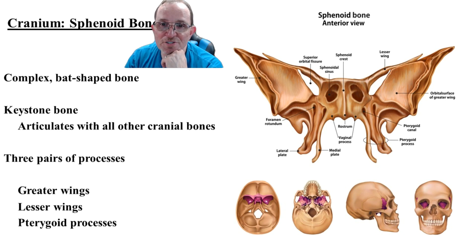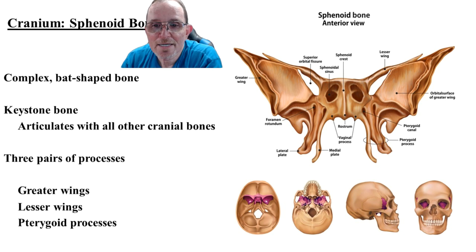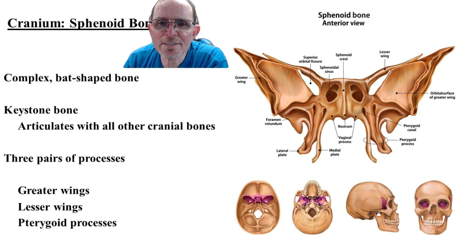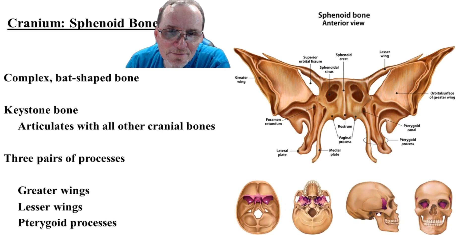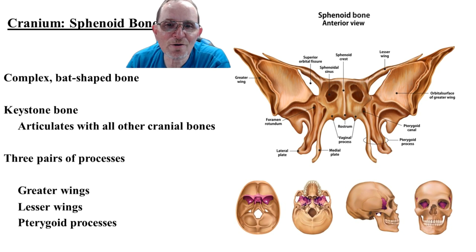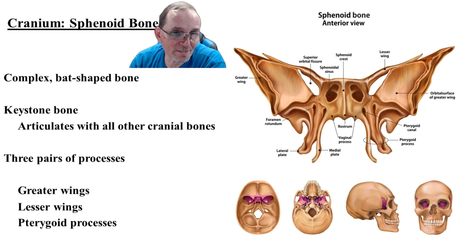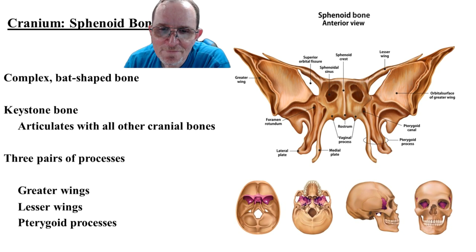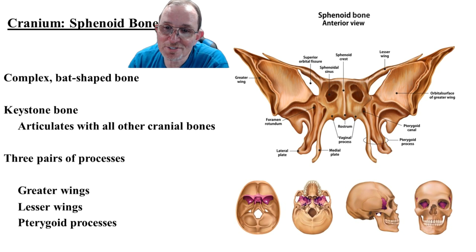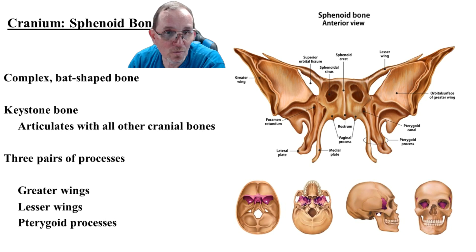Here's the sphenoid bone — it looks like a bat. This view is from the inside of the skull, where you can see the interior, middle, and posterior cranial fossa. The larger portion is the greater wing of the sphenoid, and the smaller one is the lesser wing. The pterygoid processes are really easy to see on the skull — you've got a pair on the left and a pair on the right, with lateral and medial pterygoid plates. The sphenoid also makes up part of the orbit.